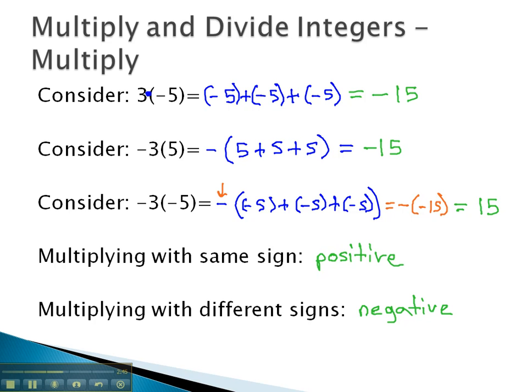Keeping in mind this pattern, we should be able to multiply very quickly with our integers. Same signs positive, different signs negative.